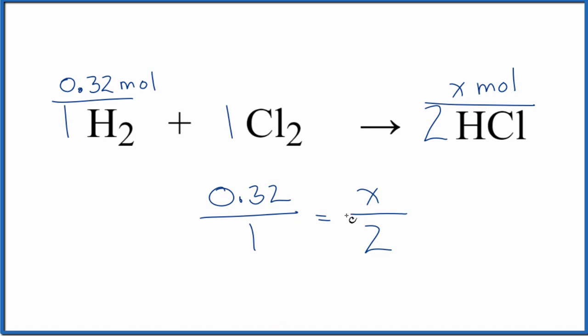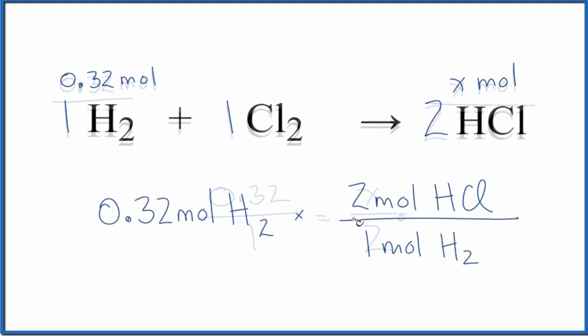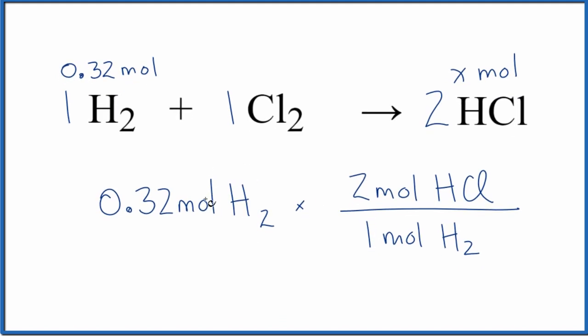The way your teacher probably wants you to do it, though, is with conversion factors. Let's try that. So we start out with our 0.32 moles, just something we made up for the problem of H2. And then we have our conversion factor, and we get this conversion factor here from the balanced equation. So I have 2 moles of HCl for every 1 mole of H2.